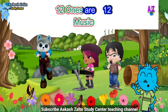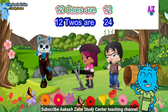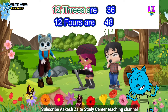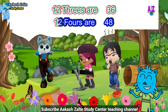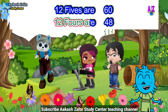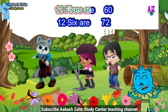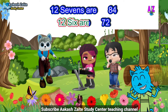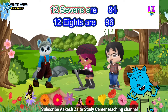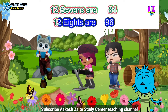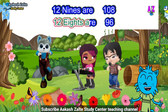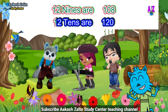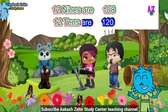12 ones are 12, 12 twos are 24, 12 threes are 36, 12 fours are 48, 12 fives are 60, 12 sixes are 72, 12 sevens are 84, 12 eights are 96, 12 nines are 108, 12 tens are 120.